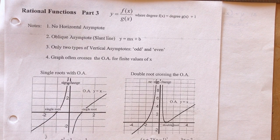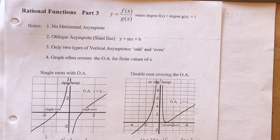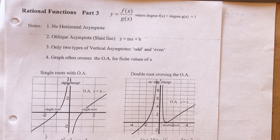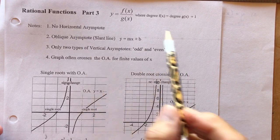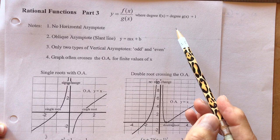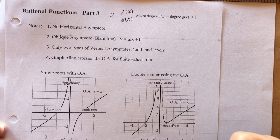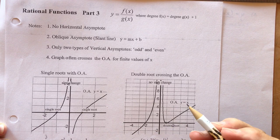Rational functions — more graphing today, part 3, where we're going to look at oblique asymptotes. This is part of section 5.2 and 5.3 in the Advanced Functions Nelson book. Please subscribe to my channel — I'm looking for a thousand subscribers, and if I get that many I'll consider doing the calculus and vectors course as well. This handout is available and I'll put the link so you can download it and follow along.